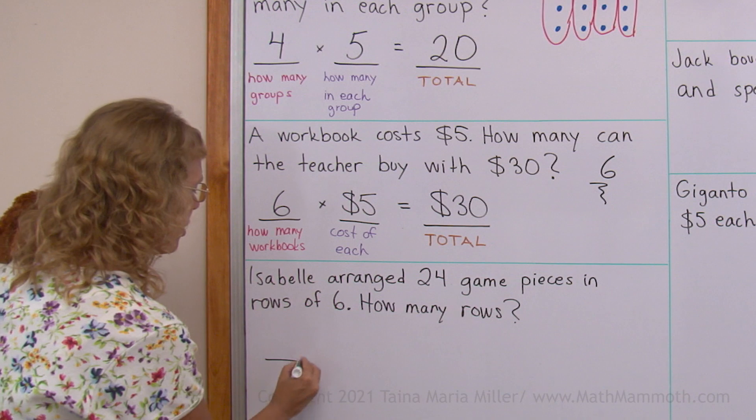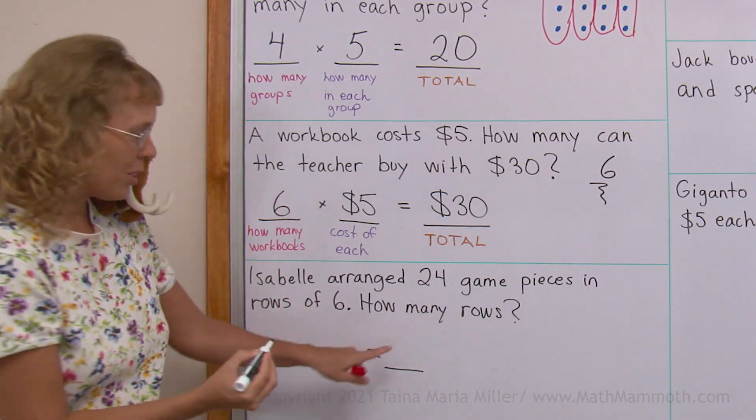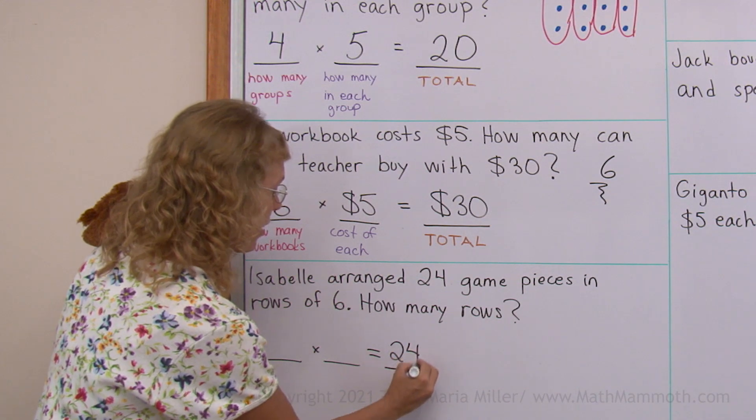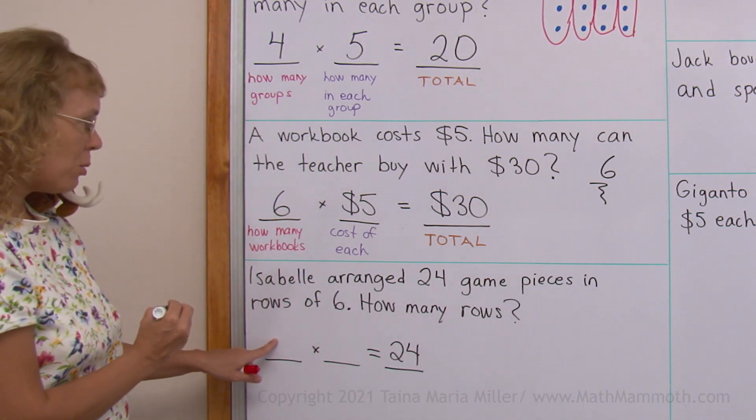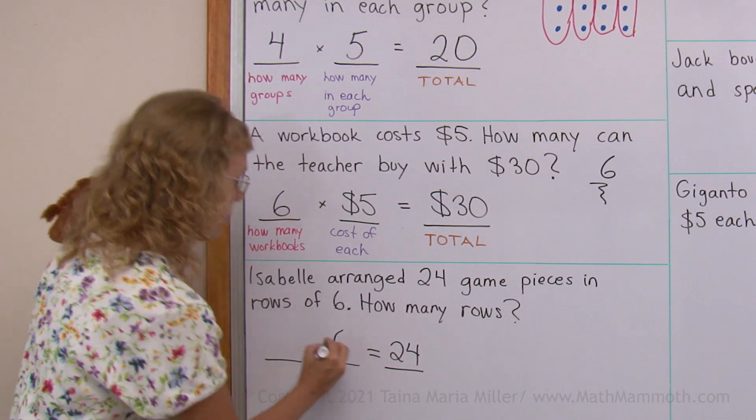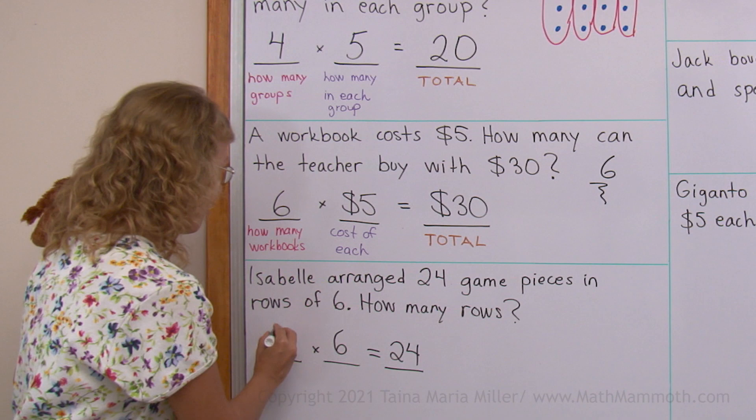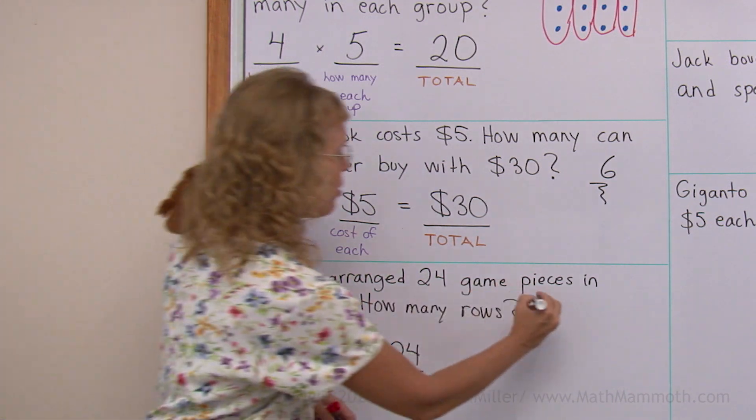And I'm gonna write the multiplication again. The total goes here, 24. And how many rows? How many in each row? There are six in each row. And so what goes here? Yep, it's gonna be four times six. So four rows.